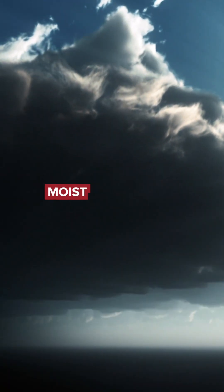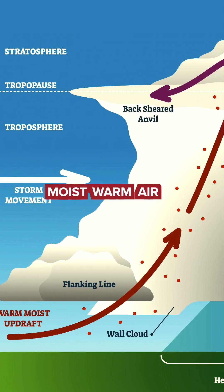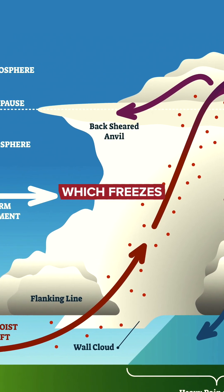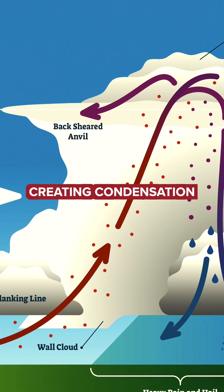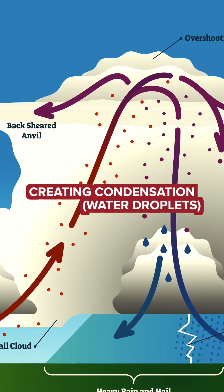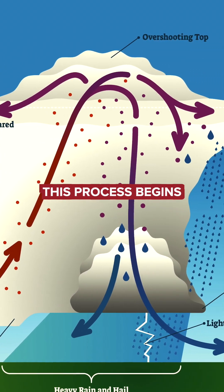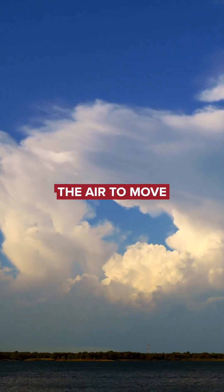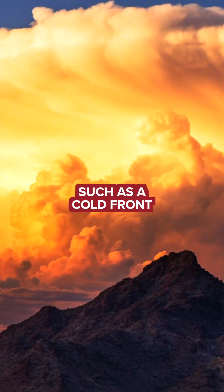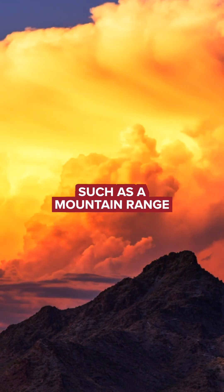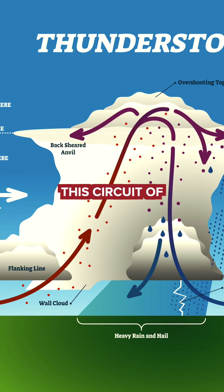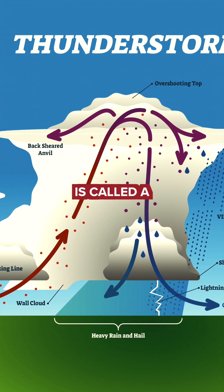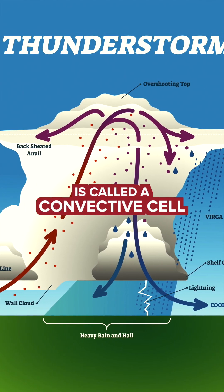Thunderstorms form when moist, warm air rises into cold air, which then freezes, creating condensation. This process begins when something forces the air to move, such as a cold front or a mountain range. This circuit of rising and falling air is called a convective cell.